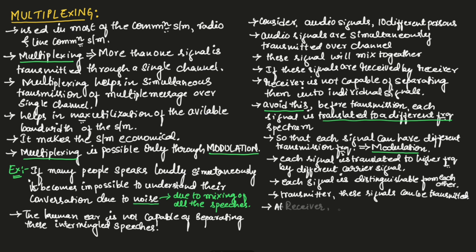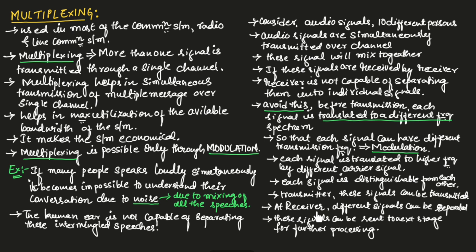At the receiver, different signals can be easily separated because they are at different frequencies. These signals can then be sent to the next stage of the receiver for further processing. This is about multiplexing. Hope you have understood the topic. Thank you.